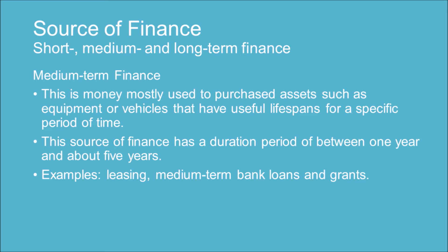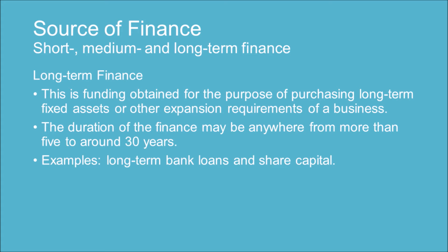Medium-term finance is money mostly used to purchase assets such as equipment or vehicles that have useful lifespans for a specific period of time. This source of finance has a duration period of between one year and about five years. Examples include leasing, medium-term bank loans, and grants.